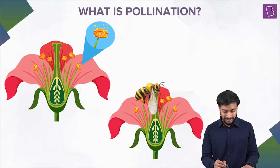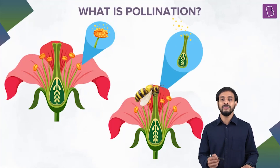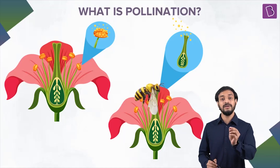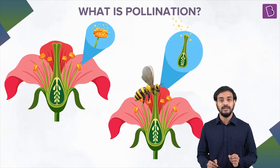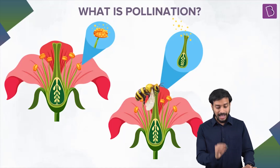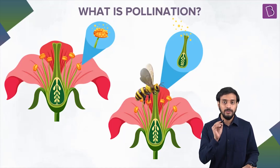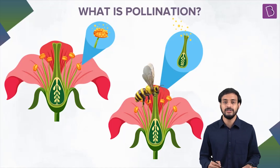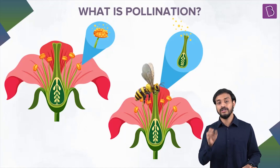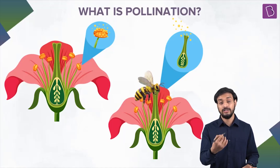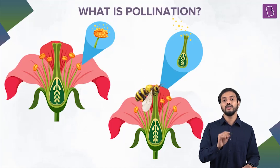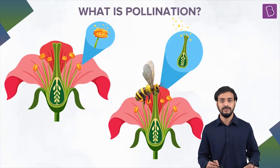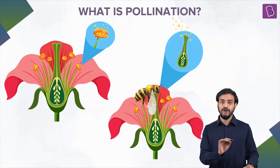When the bee is hovering around the next flower, these pollen grains are dusted on the female part. Pollen grains are the male — the male reproductive structures. These pollen grains are deposited on the female reproductive structures. This is pollination: the transfer of the pollen grains from one flower to the stigma of another flower or the same flower.